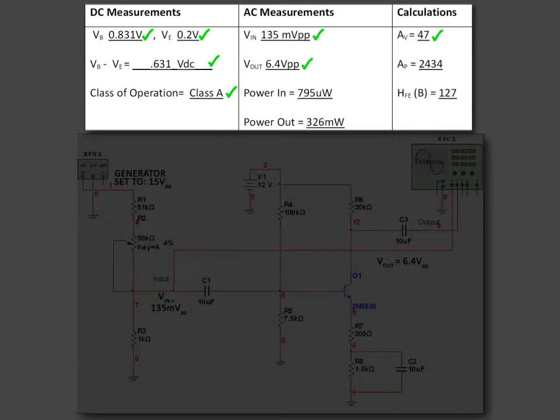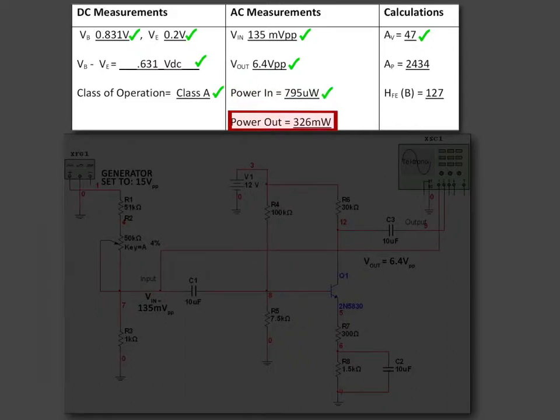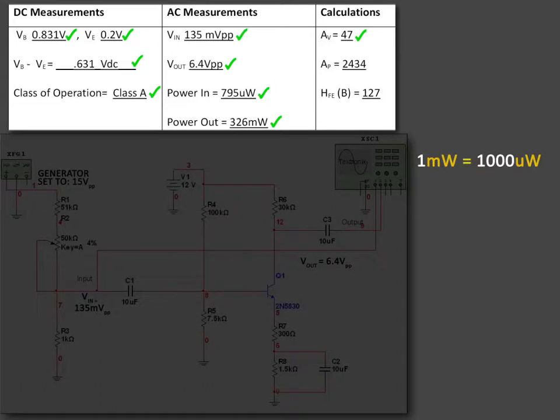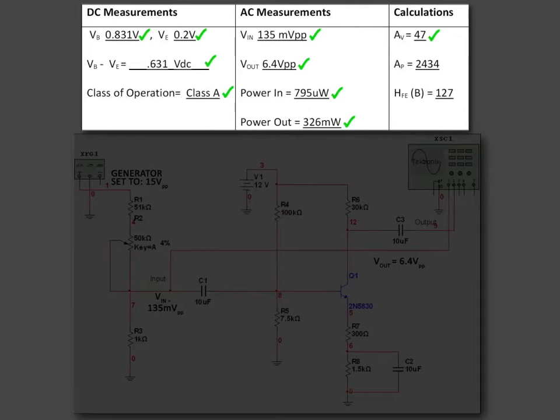And then with Multisim, we were actually able to use the watt meter to calculate the power. The power input, which was 795 microwatts. The power output, which was 326 milliwatts. And remember, milliwatts is a thousand times greater in value than microwatts, three decimal points.